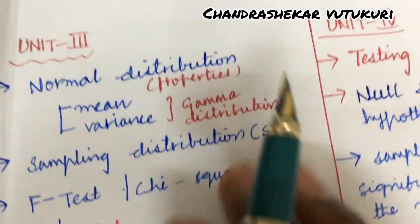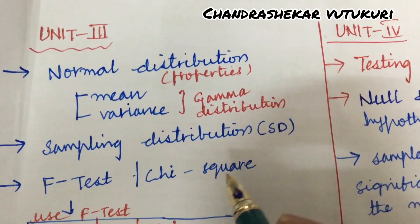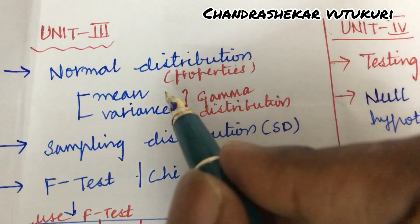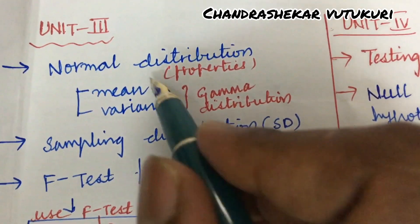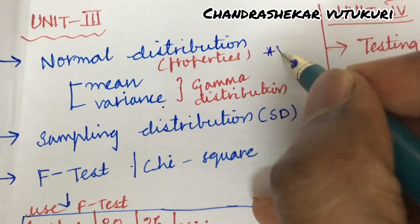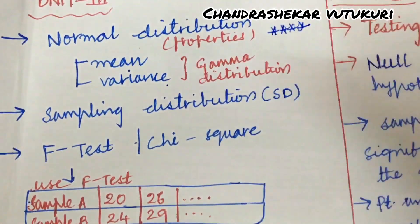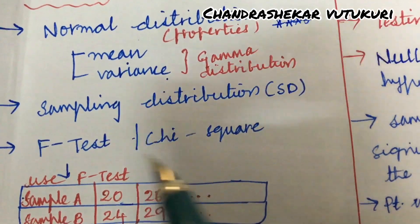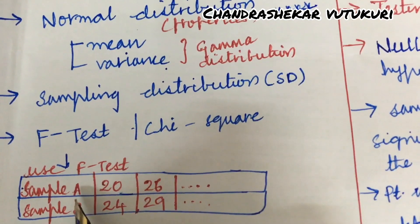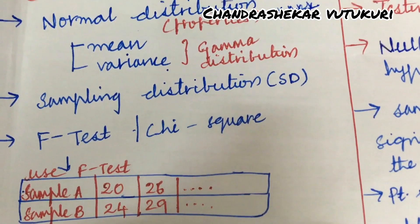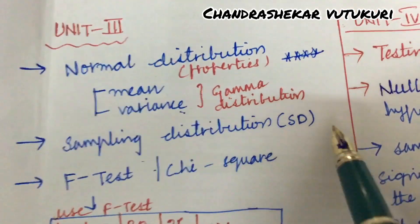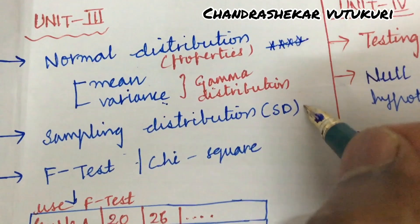Unit 3 is all about normal distribution — its properties were also asked certain times, and working out the mean and variance for a given problem in normal distribution, as well as gamma distribution. From this part you are going to get one question for sure, dear students. One more question will be related to F-test or chi-square — using F-test, work out values for sample A and sample B, or work out the mean, variance, and standard deviation using sampling distribution for a given problem.